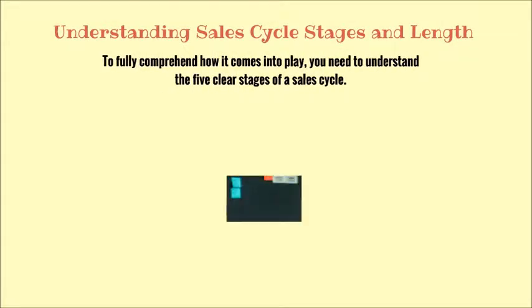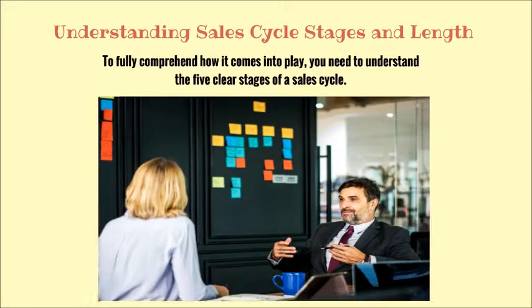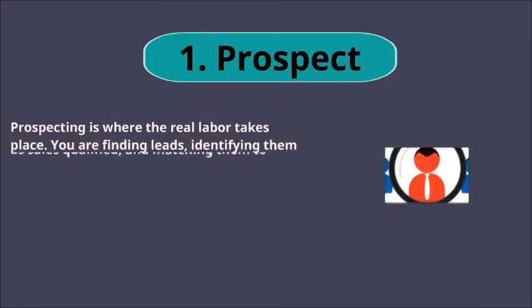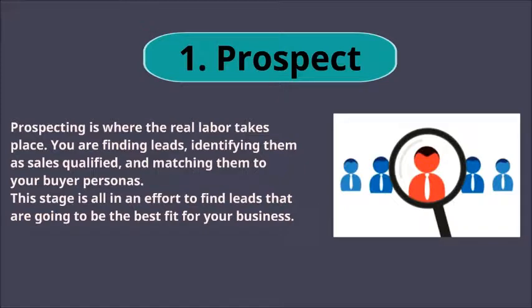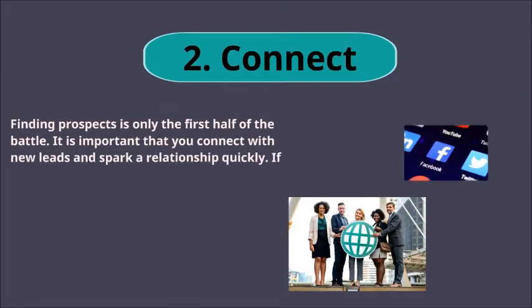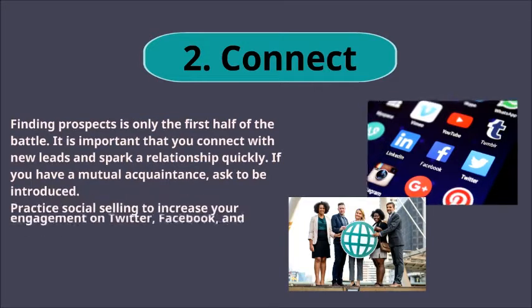You can see how your business compares to the rest of the industry. To fully comprehend how it comes into play, you need to understand the five clear stages of a sales cycle. Number one: Prospect. Prospecting is where the real labor takes place. You are finding leads, identifying them as sales qualified, and matching them to your buyer personas. This stage is all in an effort to find leads that are going to be the best fit for your business.